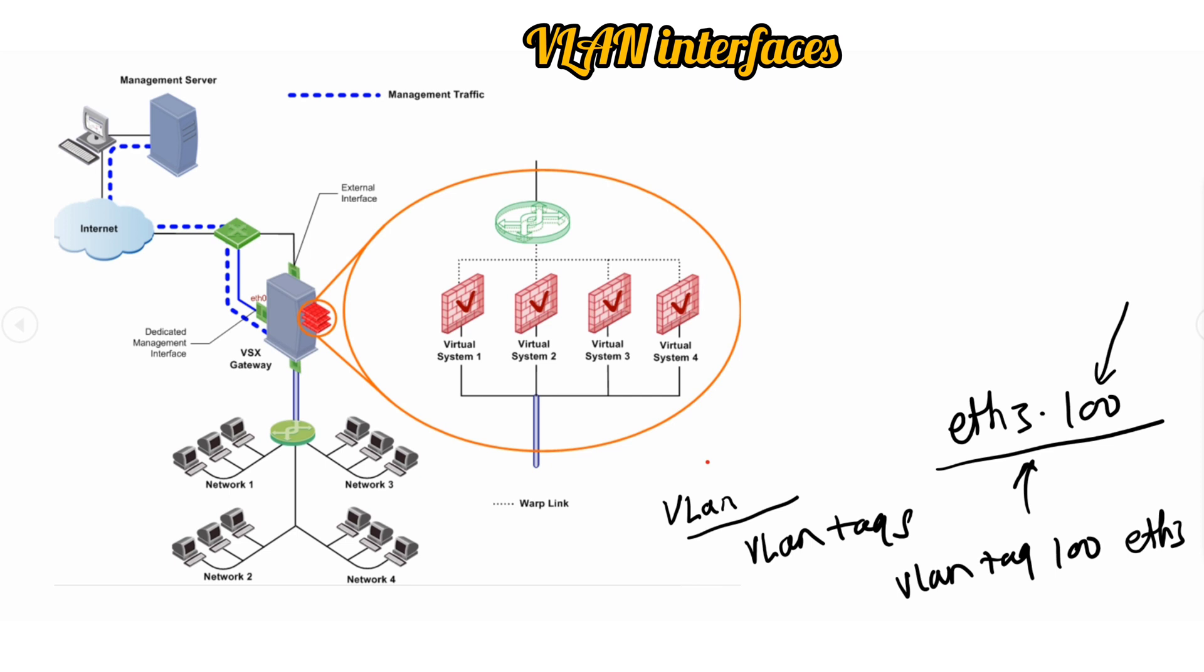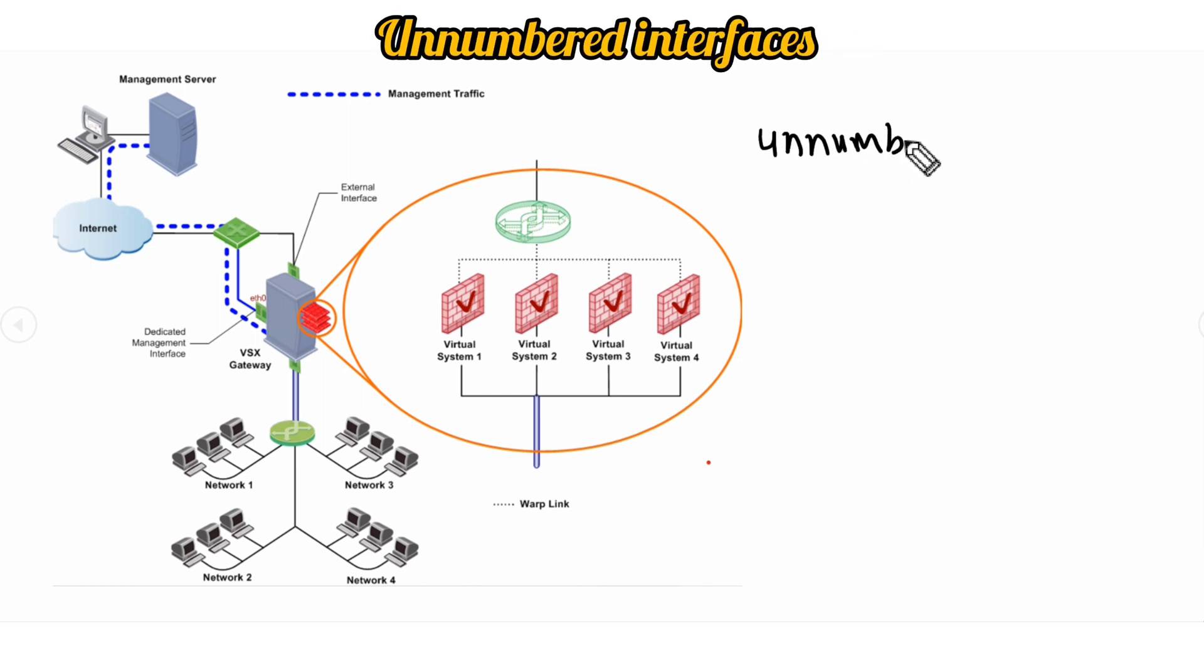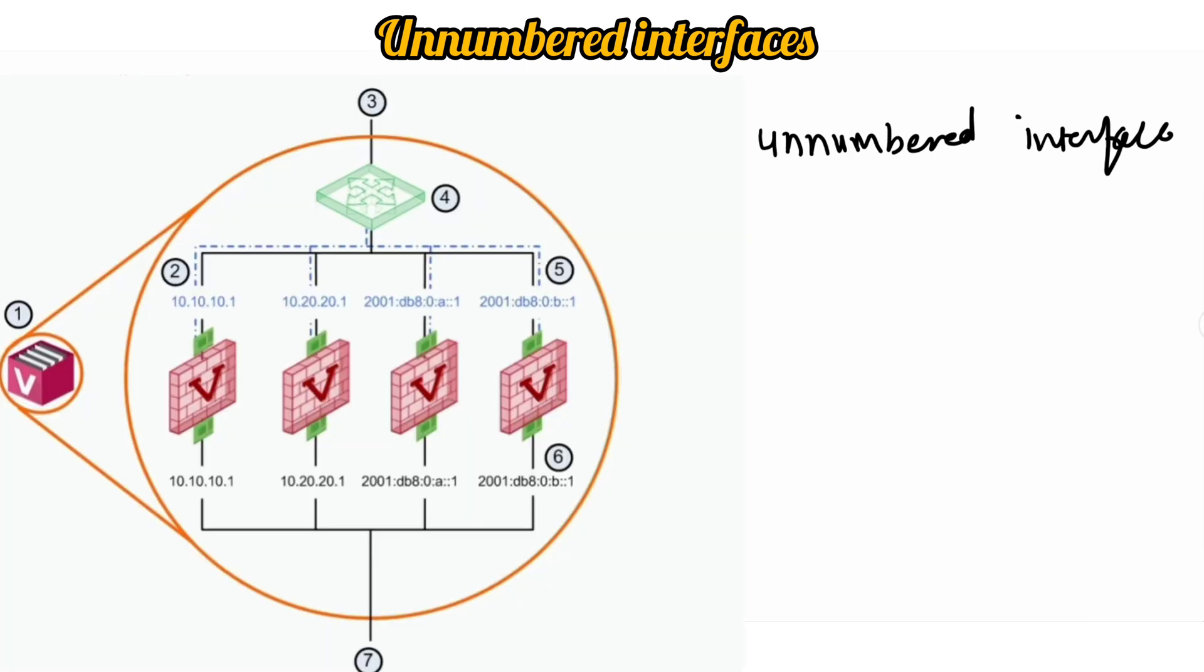Guys, there is one more interface which is also used in VSX. We call it unnumbered interface. So VSX lets you reduce the number of IP addresses required for VSX network deployment when you use one or more virtual routers. You know we discussed about this warp link.